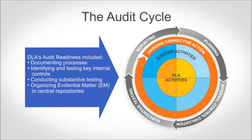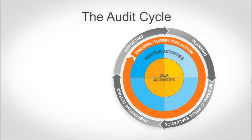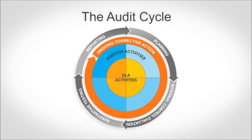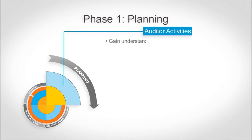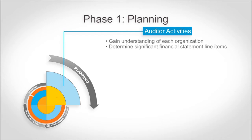Now let's take a look at each phase of the audit cycle in more detail. In Phase 1, the Planning Phase, auditors gain an understanding of each organization within DLA, determine significant financial statement line items, and review business processes for testing and timing of procedures.